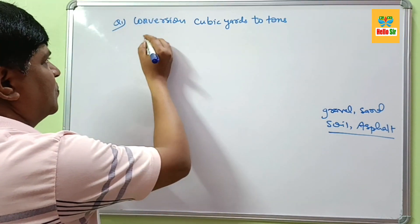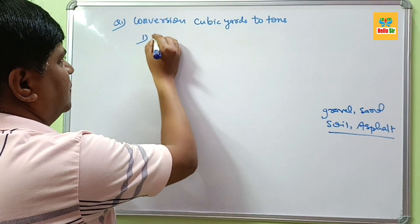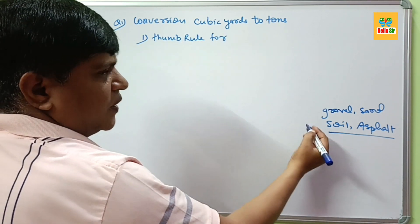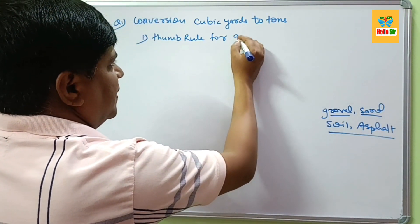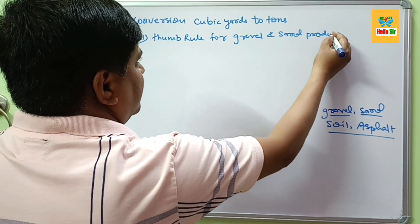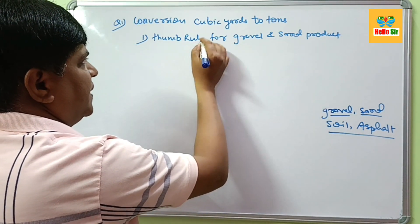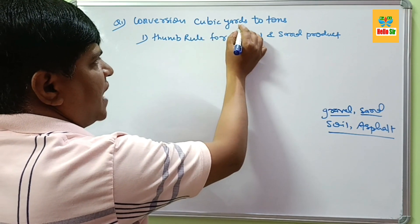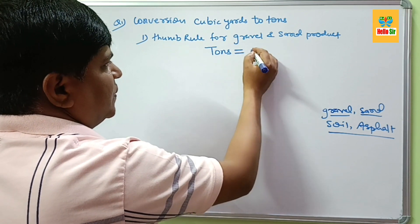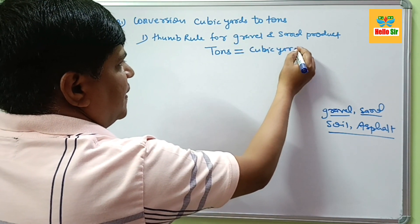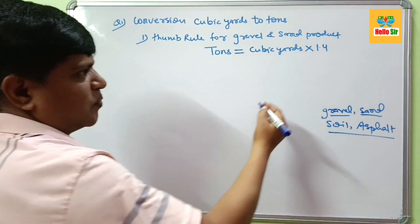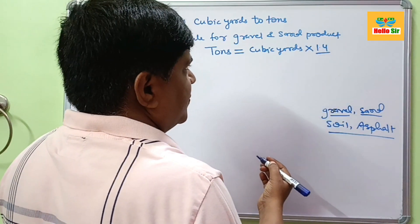Suppose for the simple formula, there is a thumb rule for the conversion of gravel and sand product. Tons of gravel equals cubic yards of gravel multiplied by 1.4. This is the conversion factor, remember this one, 1.4.